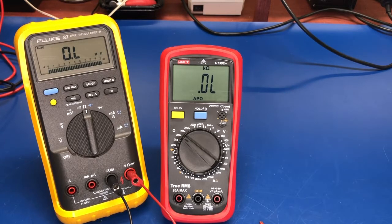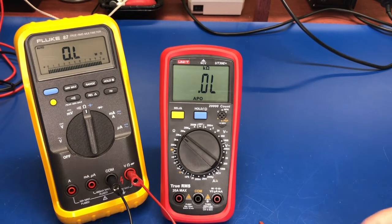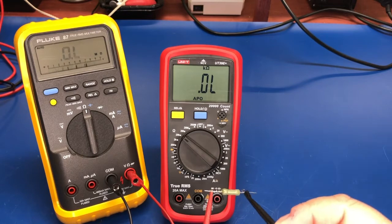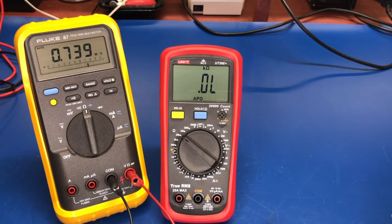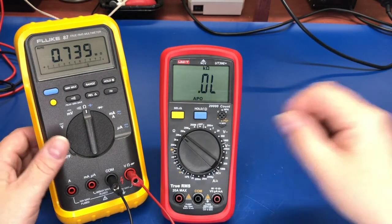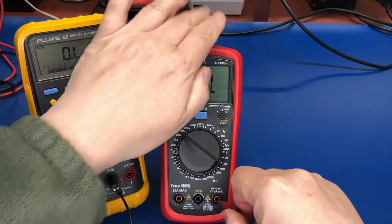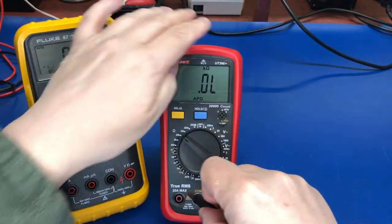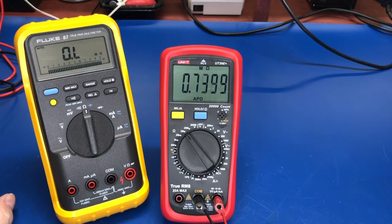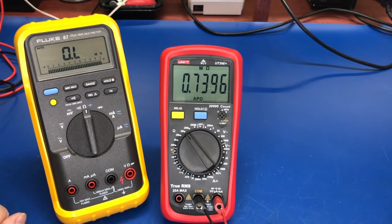Next, we're going to have a look at a 750k ohm resistor. Fluke reads that as 7.39, 7.40. And this is the same thing, 7.39. So looking good.